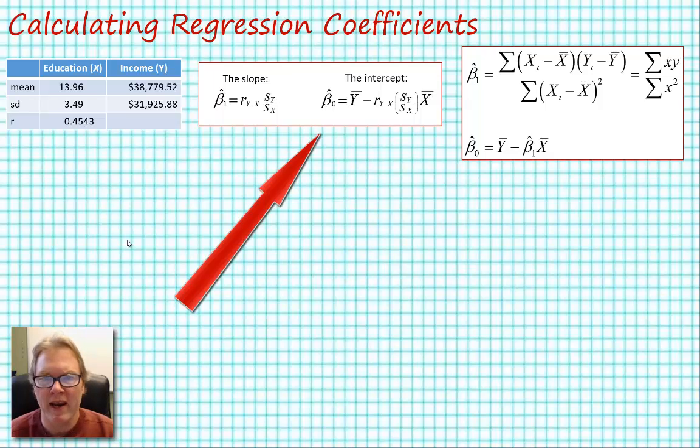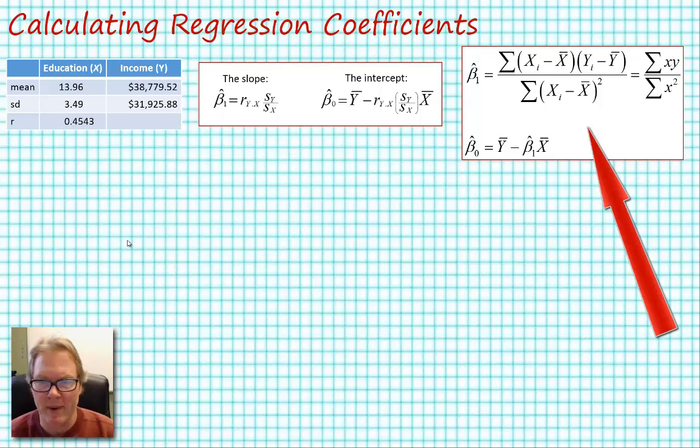If you have the raw data and are expected to calculate these same regression coefficients, you're better off using a spreadsheet and using a formula similar to the one in the right hand box.